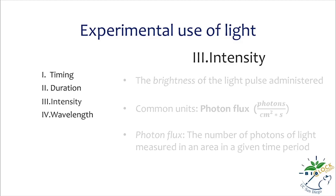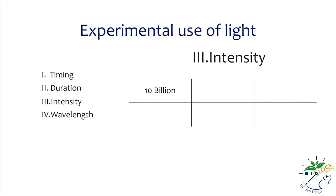A light pulse can have large values of photon flux. For example, a moderately bright light pulse can have 10 billion photons per centimeter squared per second. Because these large numbers are hard to work with, typically they are converted to log. So instead of 10 billion photon flux, we can say 10 to the 10th power photon flux, which is the same as 10 log photon flux. If we increase the light intensity tenfold, the log would increase by 1. So 100 billion, or 10 to the 11th power, is the same as 11 log photon flux.